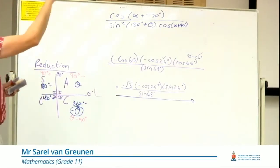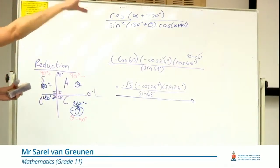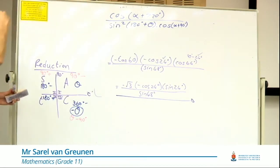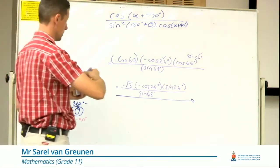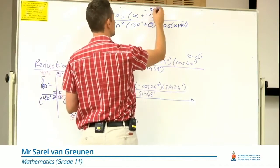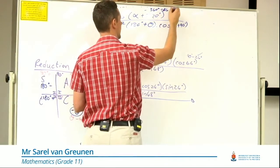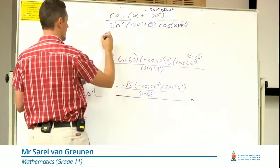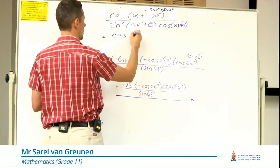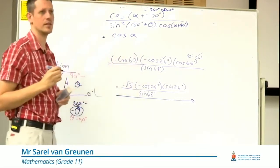That plus 720 is way too big, so I'm going to subtract 360 and I'm going to subtract 360 again, leaving me with just cos of alpha.